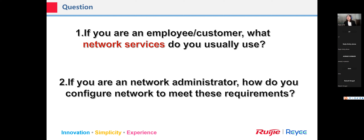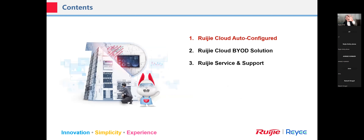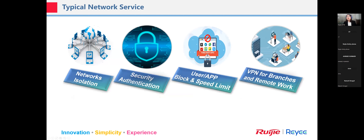This training will cover how to use the Ruijie Cloud app, auto configuration, and BYOD to meet these requirements easily. There are three topics we'll discuss one by one. The first part is auto configuration, where we can summarize typical network services.